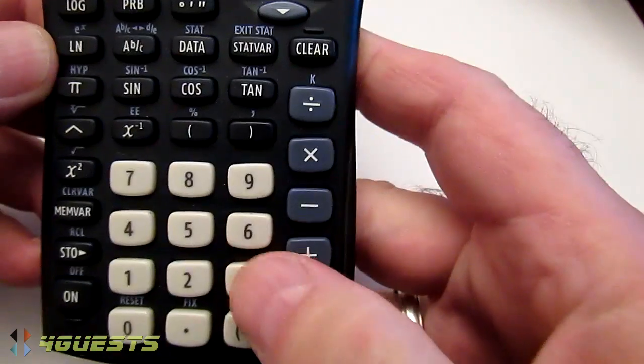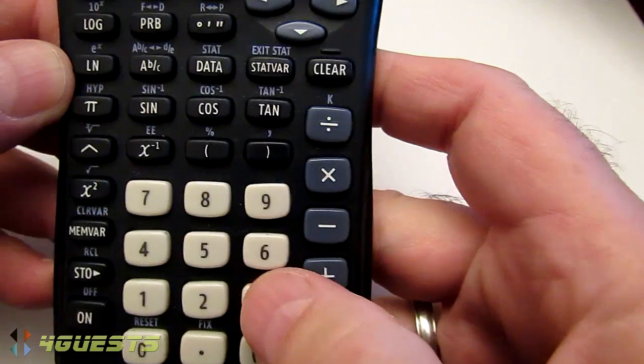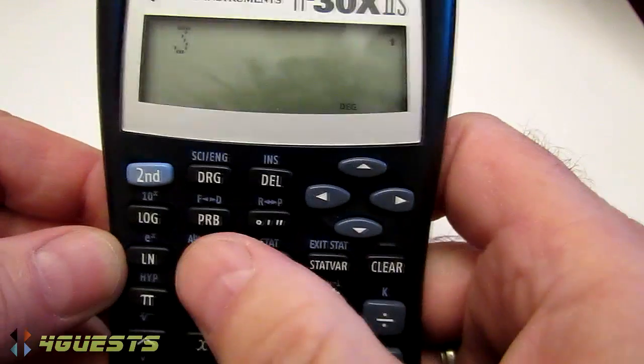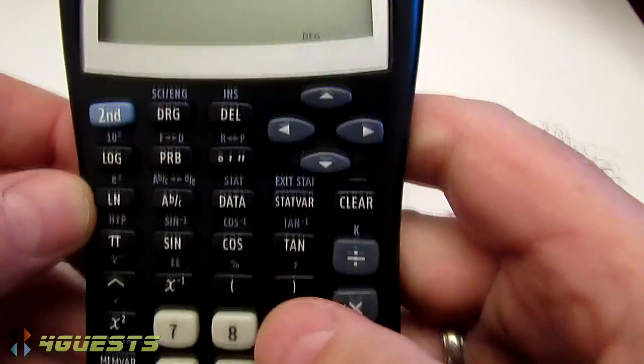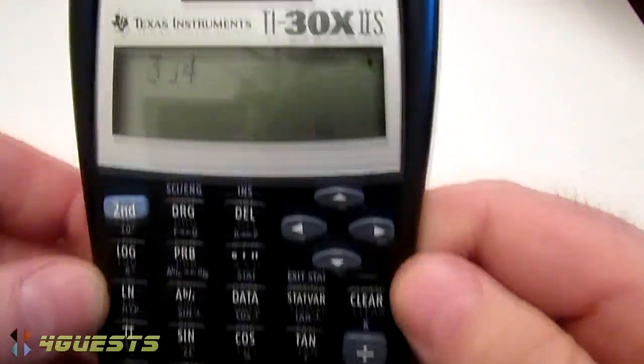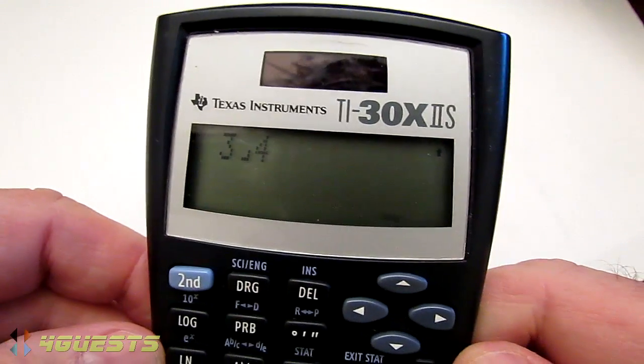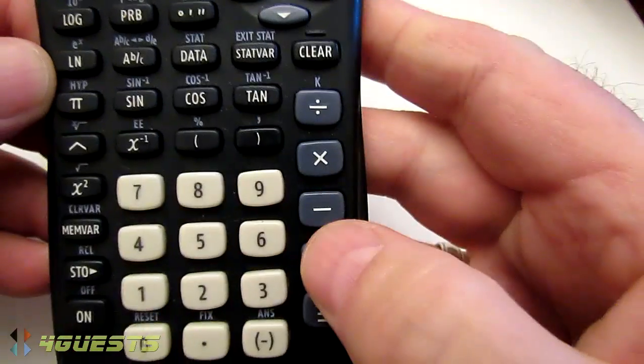I'm going to randomly select 3, AB over C, 4 - that's 3 fourths - plus.